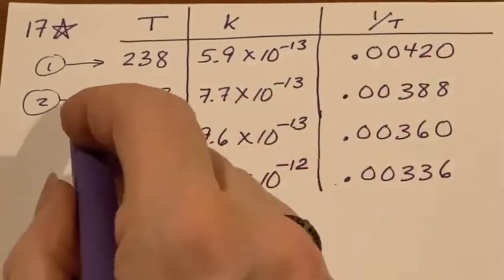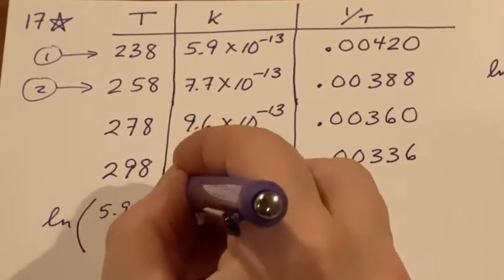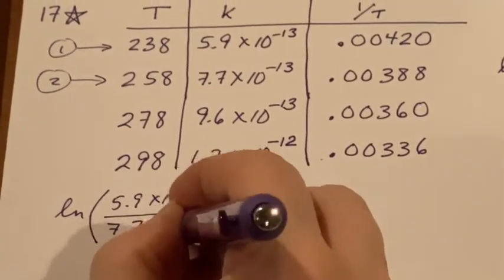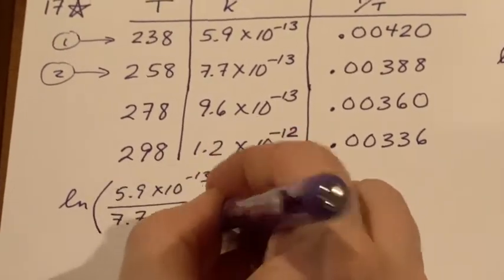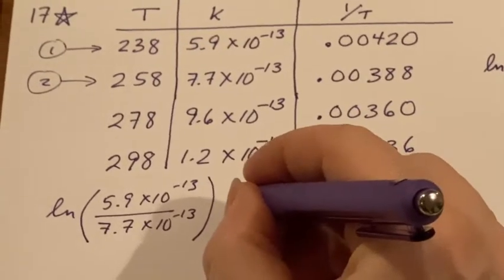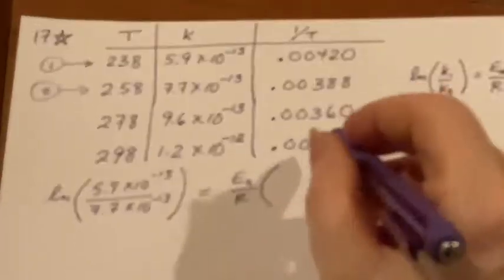Let's try working that out. We will put them in. I want k1 over k2, so I'm going to put the 5.9 times 10 to the negative 13 over the 7.7 times 10 to the negative 13. That's nice - the negative 13, this part's all going to cancel and I'll be able to calculate that easier.